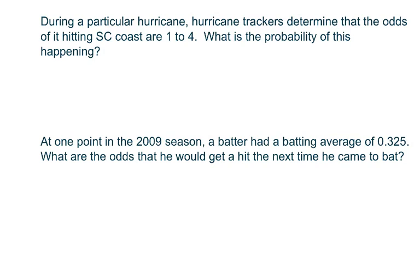And we've got another one. During a particular hurricane, the hurricane trackers determine that the odds of it hitting the South Carolina coast are 1 to 4. So what's the probability? So that's basically what we did before. The odds are success to failure, which is 1 to 4. And so for the probability, that's going to be 1 over your failure plus your success, which equals 1 fifth.